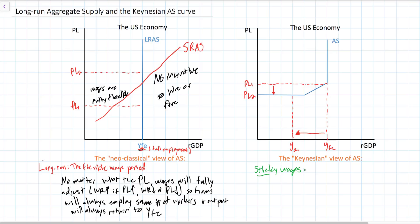Sticky is another word for inflexible. According to the Keynesian view, because wages are sticky, when there is a decrease in prices in the short run there will be relatively little deflation — prices will not fall by very much. So we see a relatively small decrease in prices, but there will be a relatively large decrease in output, national income, and employment.